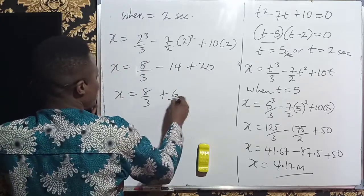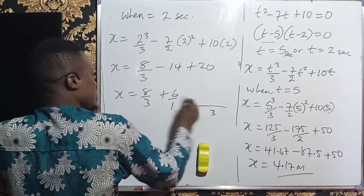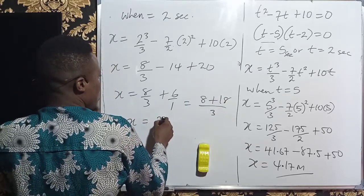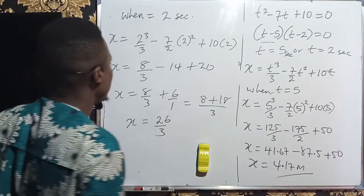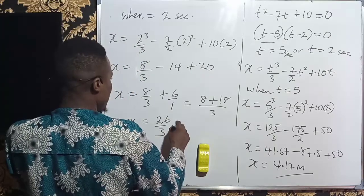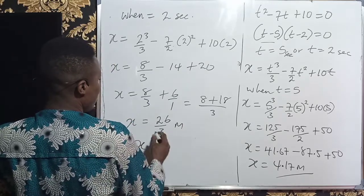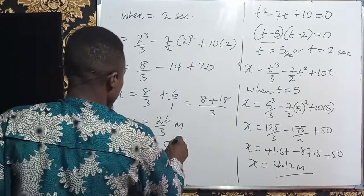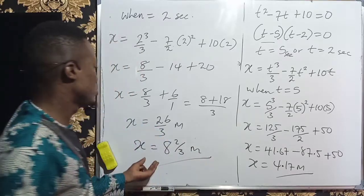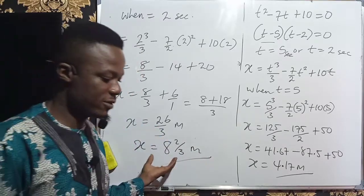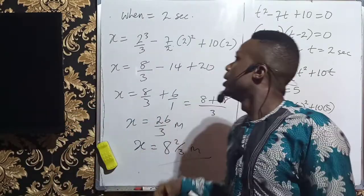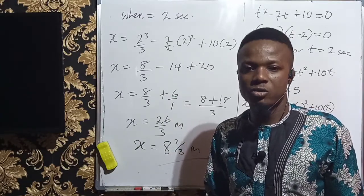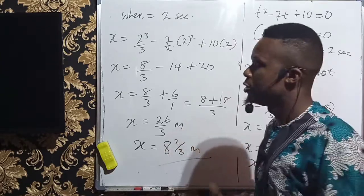So adding together, this is over 1, LCM is 3. This divided is 1, 1 times 8 is 8, plus this divided is 3, 3 times 6 is 18. So my x is 26 all over 3, 26 over 3 meters. You can change to a mixed fraction, 3 divided by 26 is just like 8 whole number remaining 2 all over 3 meters. That's just the answer, or 8.67 meters. Anyone can serve. So that's just how we can apply differentiation in getting and in solving rectilinear motion. So if you've enjoyed what you've watched, kindly subscribe to my channel to be notified when I upload new content. Thank you.